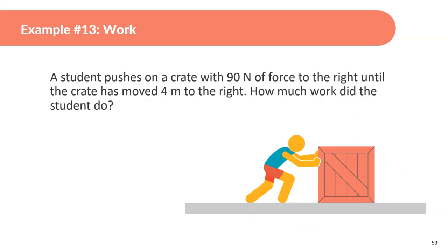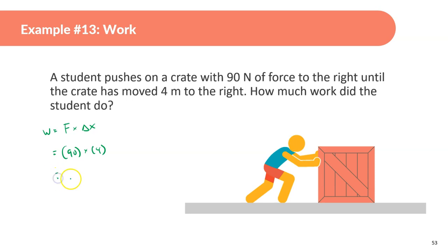Example 13, first math example: a student pushes a crate with 90 newtons of force to the right until it has moved four meters to the right. How much work did the student do? Work equals force times displacement; both are in the same direction, so we plug in: 90 times 4 equals 360 joules.